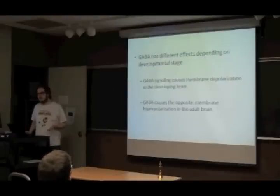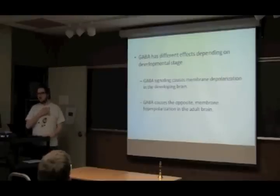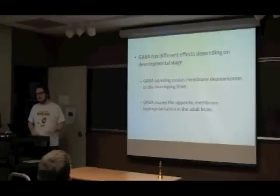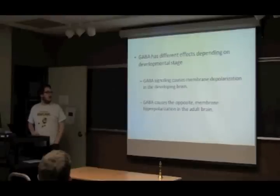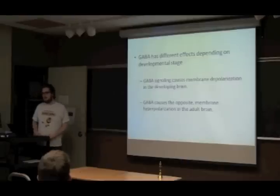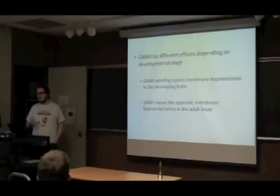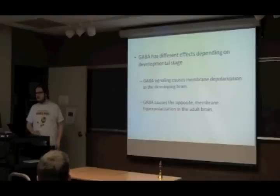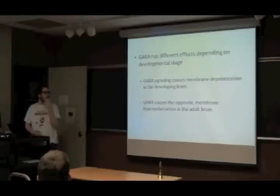This is sort of interesting. With a lot of other neurotransmitters, they sort of have one effect all the time. But depending on the developmental stage or the age of an organism, they can have the completely opposite effect. In grown mammals, GABA works to inhibit or decrease the likelihood that a neuron is going to fire. But early on during development, it does the opposite — it triggers neurons to fire. They're not really sure why this happens, but it's a neat thing about GABA.